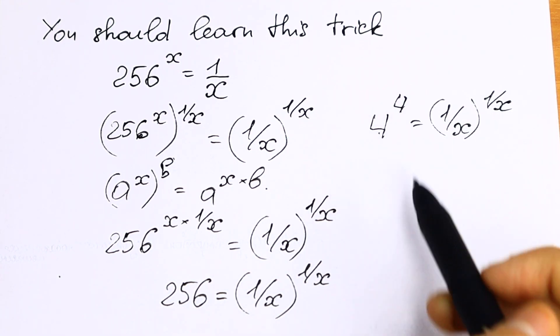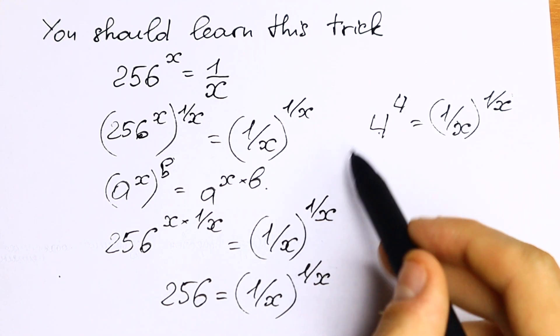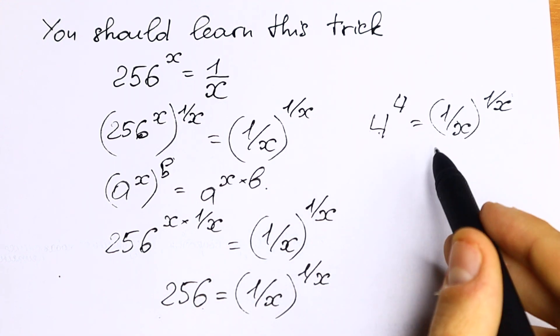So as you can see, we have same base and same exponent on both sides. This is still 256, but we write it in another way.